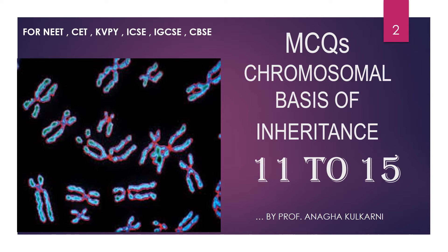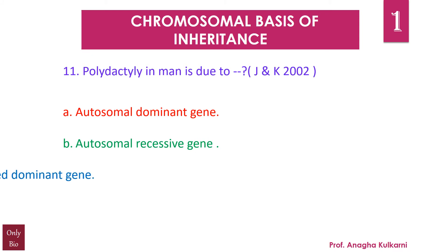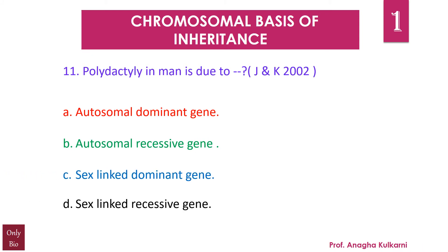Do share it with your friends and let's study together. Question number 11: Polydactyly in man is due to — A) autosomal dominant gene, B) autosomal recessive gene, C) sex-linked dominant gene, D) sex-linked recessive gene. Polydactyly has already been discussed in my video on NEET points for chromosomal basis of inheritance. The answer is A — polydactyly in man is due to an autosomal dominant gene.